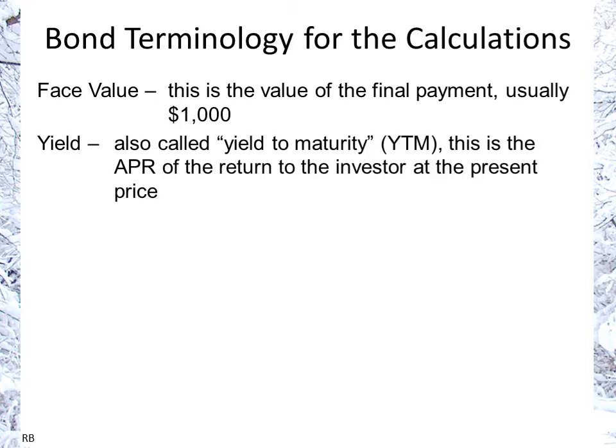We have yield, also called yield to maturity, short form YTM. That's the annual percentage rate of the return that the investor will receive given the present price of the bond. Because as the price changes, the return on a bond will change, since the payments for the duration of the bond are fixed.